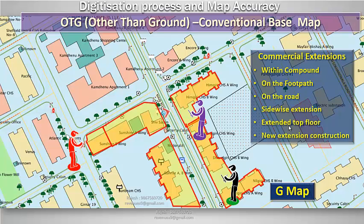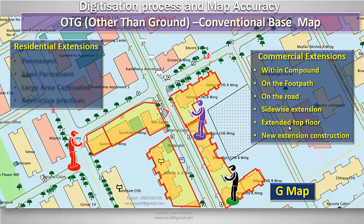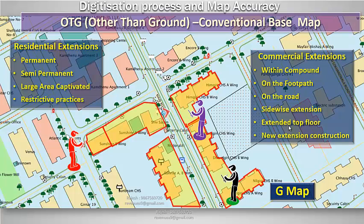It also allows residential deviations to be captured as permanent, semi-permanent, large area captivated, restricted practices, etc. G map may help us to plug the revenue leakages due to all extensions and expansions in fast-developing urban cities.